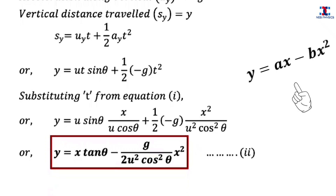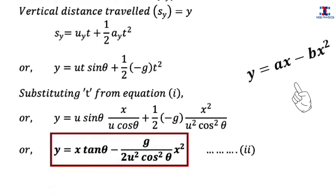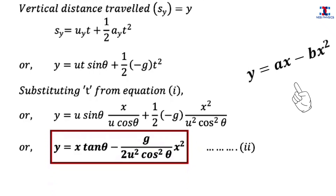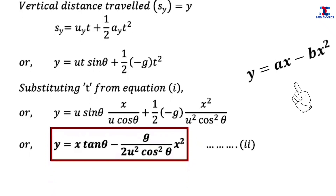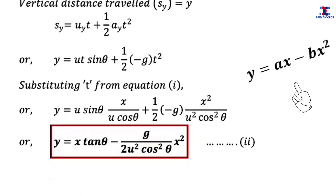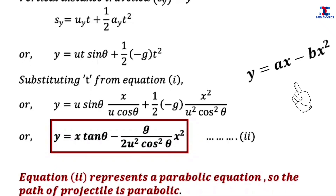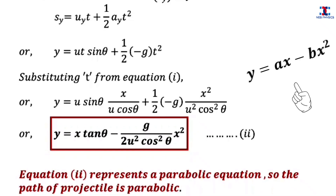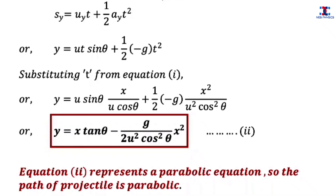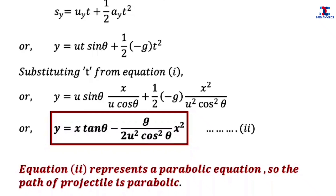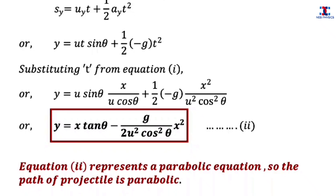Equation 2 is in the form of y equals ax minus bx², which represents the equation of a parabola. So the path of a projectile is parabolic.